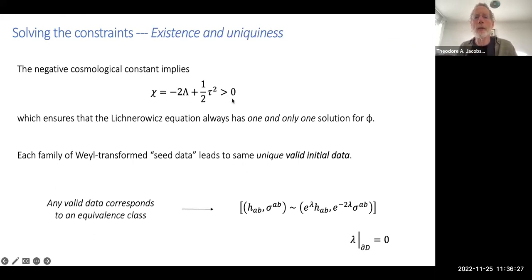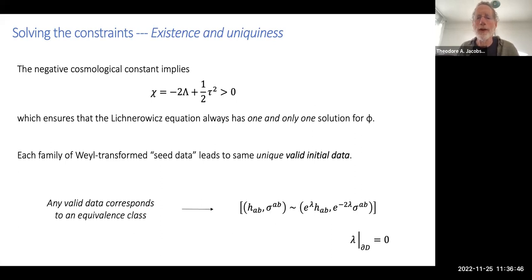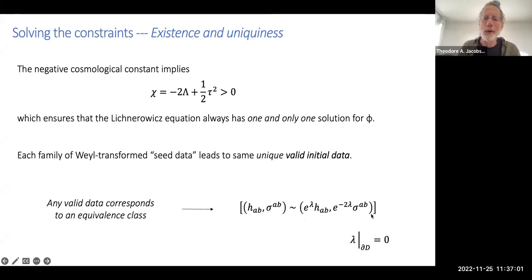We start with seed data — a metric and σ satisfying the momentum constraint and the boundary condition — then apply a Weyl transformation with conformal factor e^φ to the metric and e^{−2φ} to σ. The Weyl-transformed σ̃ is still covariantly divergence-free with respect to the transformed metric. Plugging into the Hamiltonian constraint gives the Lichnerowicz equation for φ, an elliptic equation with boundary condition φ = 0 at the disk edge, which has a unique solution for every seed data.